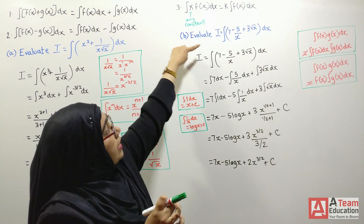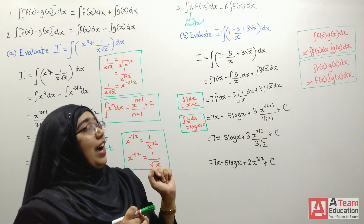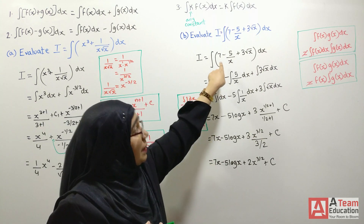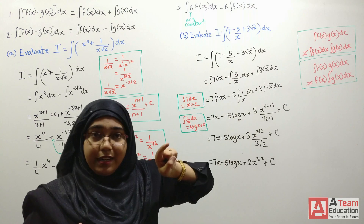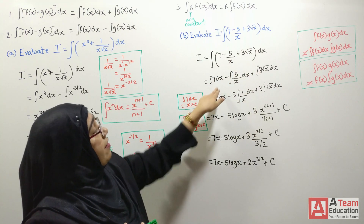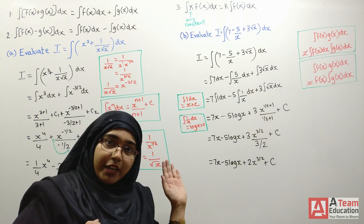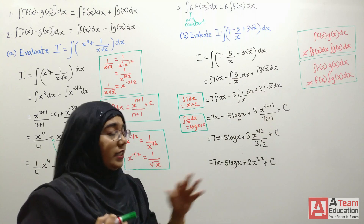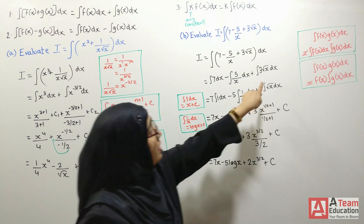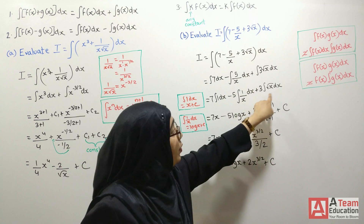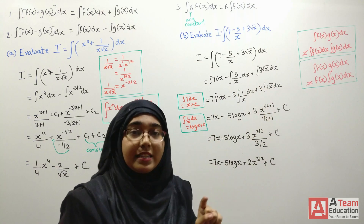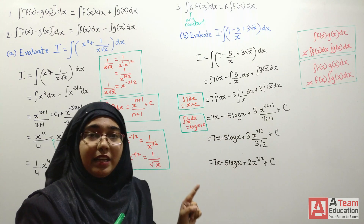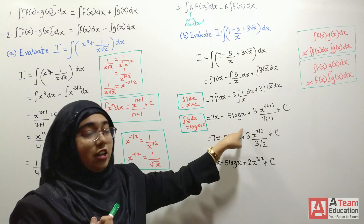Here we will see an example on this. The question is: integrate 7 minus 5 over x plus 3 root x. Now, we can give integration to each term individually because of the sum rule and difference rule — integrating 7, minus 5 over x, and 3 root x separately. We take the constants out of the integral sign. The integral of 1 with respect to x is x, and the integral of 1 over x is log x.